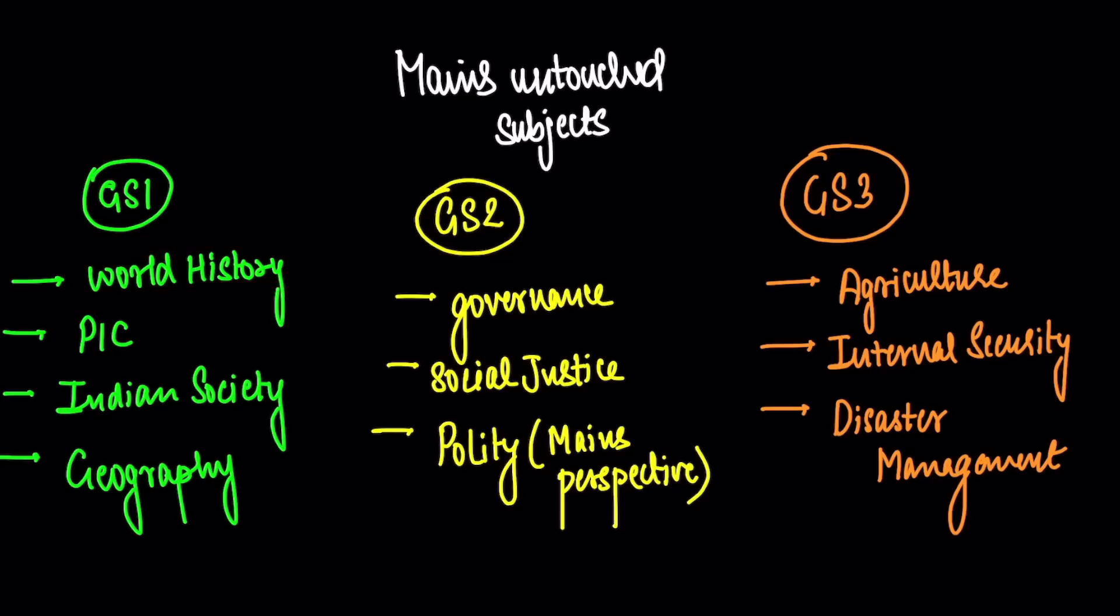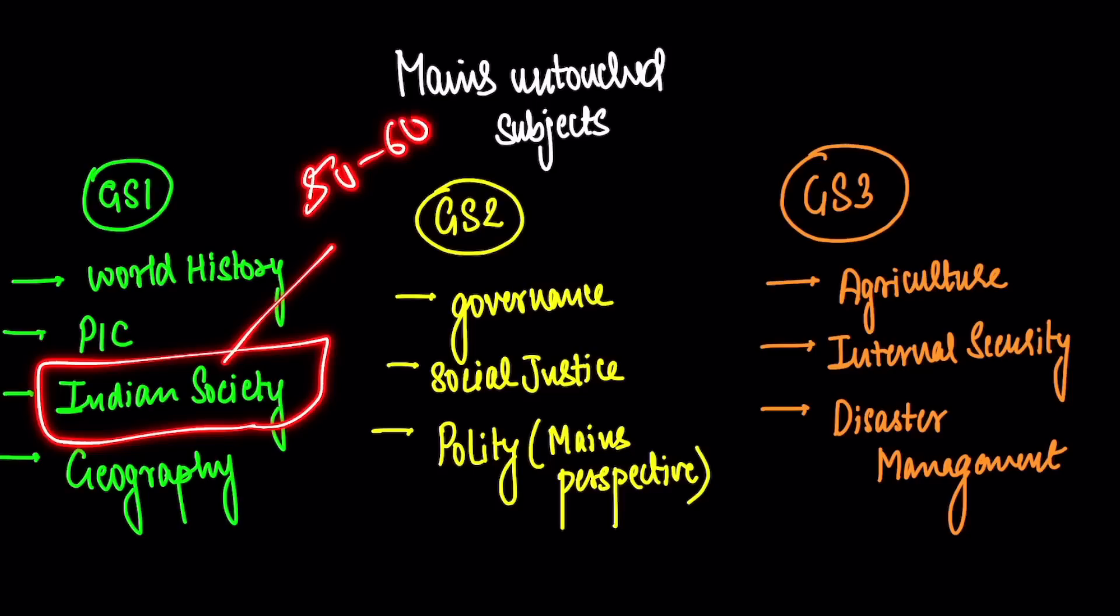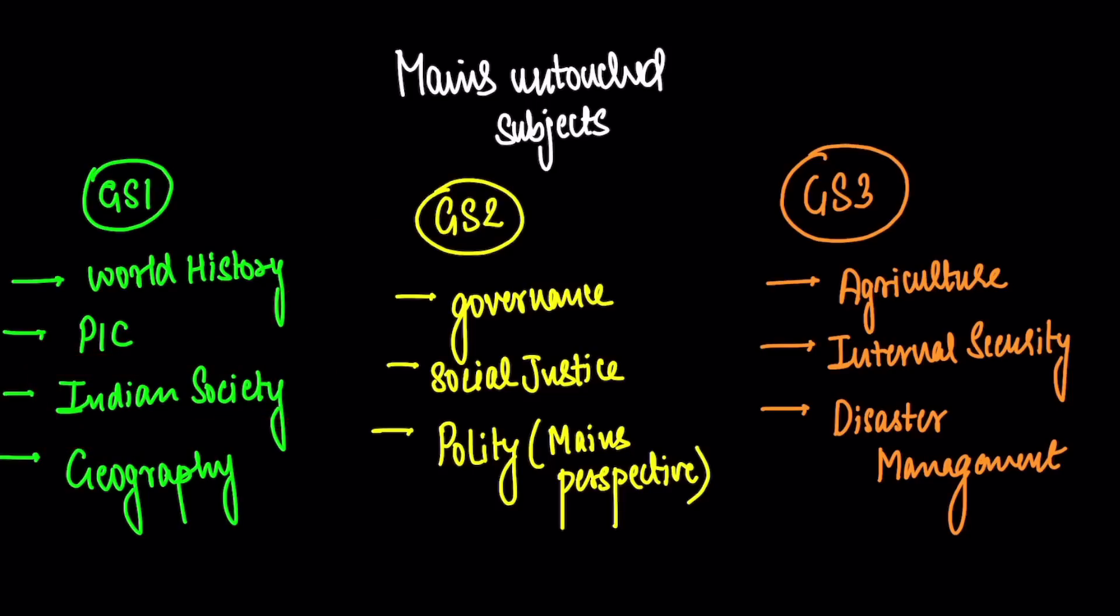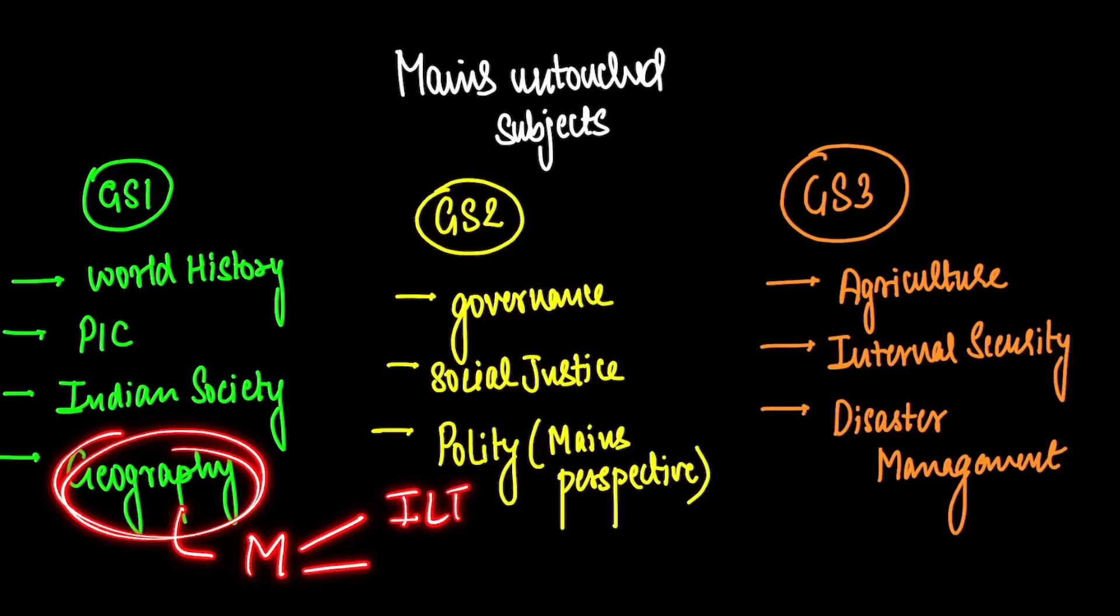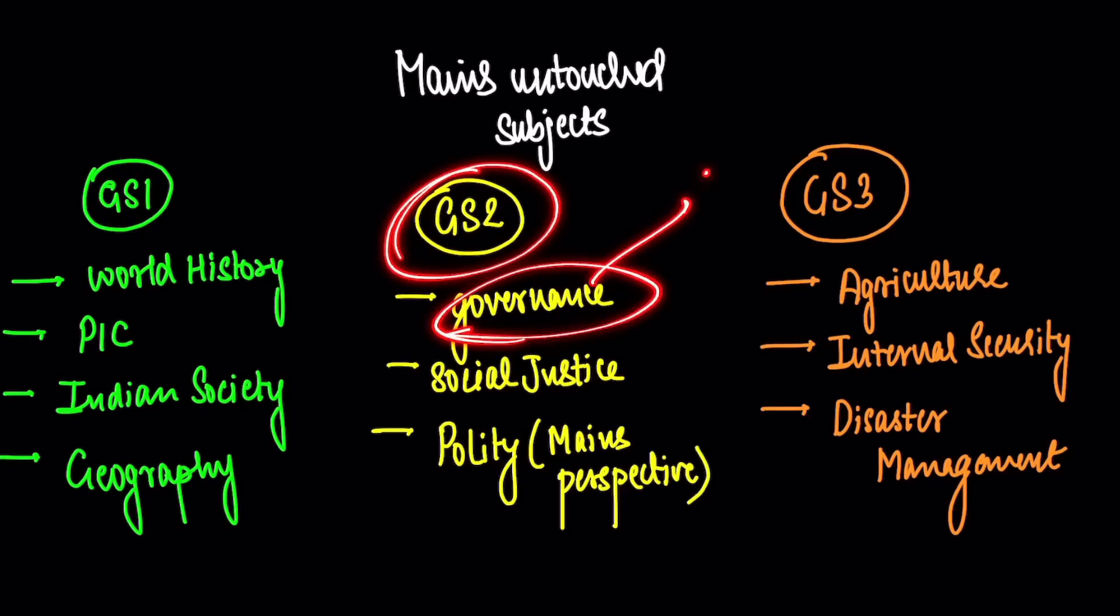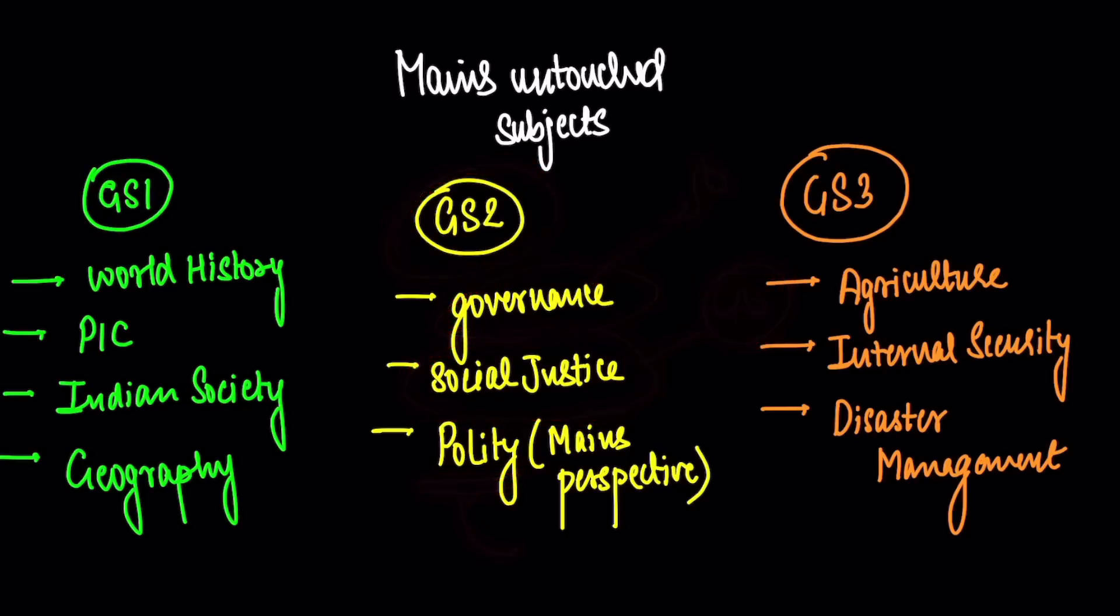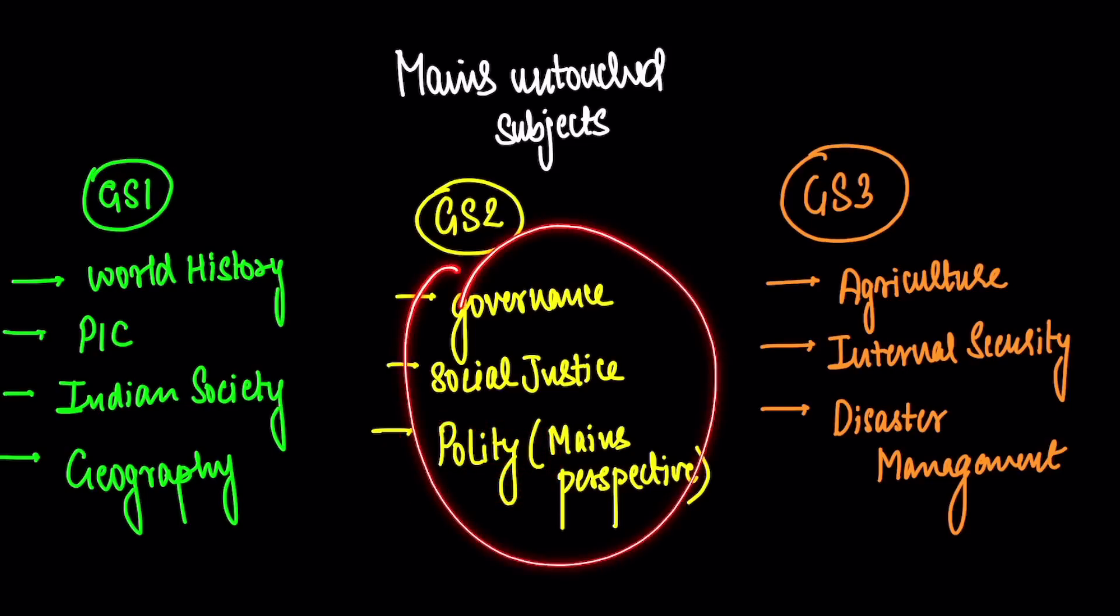Geography from the mains perspective, where there's industrial location theory and location of resources - have we studied this for mains? No. Then in GS2, governance is 50 marks in the mains. Social justice is about 40 marks in the mains. And polity from the mains perspective - for example, things like salient features of the Representation of People's Act and its analysis. We don't study these things for prelims. From Laxmikant, you cannot even answer polity mains questions properly. So these things we haven't done.